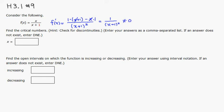And also, the derivative is undefined when x equals negative 1. But you can see that x equals negative 1 is not in the domain of the original function. So actually, it does not exist. There are no critical numbers.